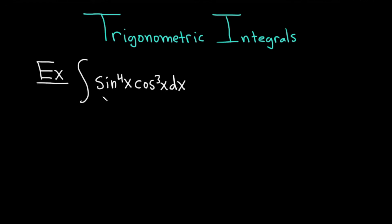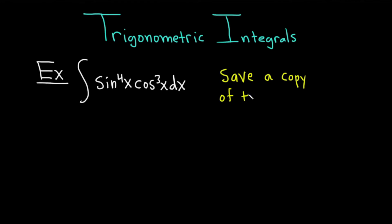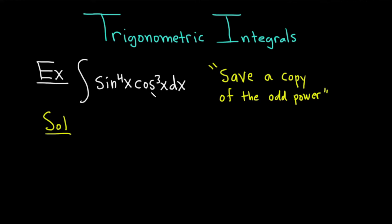Our first example is the indefinite integral of sine to the fourth power times cosine to the third power with respect to x. The technique is: whenever you have powers of sine and cosine, you want to save a copy of the one that's being raised to an odd power. In this case, because we have cosine cubed, we're going to save a copy of cosine. As long as you have something to an odd power, this technique will work.